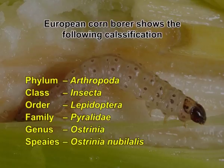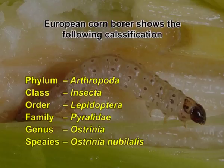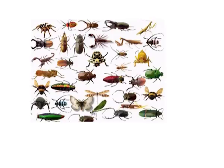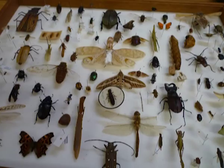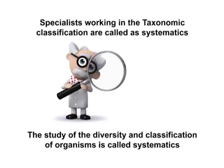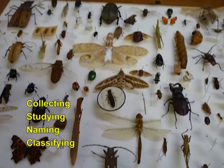Taxonomy is a related science that involves the theoretical basis for classification and the study of classification schemes. Specialists working in taxonomy and classification are called systematists. The study of the diversity and classification of organisms is called systematics. Hundreds of insect systematists around the world work daily on the task of collecting, studying, naming, and classifying new species of insects.